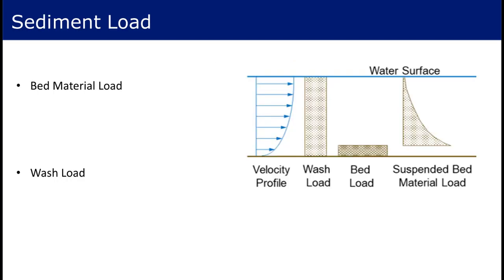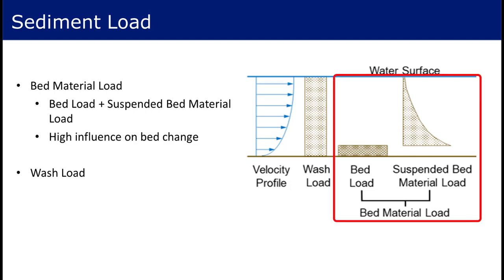Total load can also be divided into two additional categories, bed material load and wash load. Bed material load describes the portion of the total load that is comprised of sediment sizes found in the bed. This is the portion that has primary influence on bed changes and is usually of most interest to the modeling application.